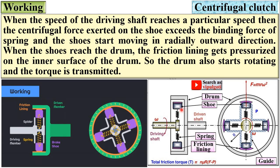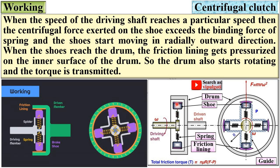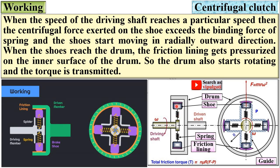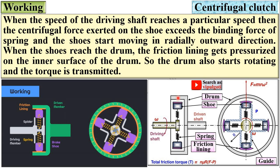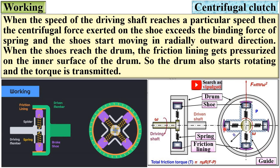When the centrifugal force is greater than the binding spring force, the shoes start moving radially outward. When the shoe reaches the drum, the friction lining gets pressurized on the inner surface of the drum, the drum starts rotating, and torque is transmitted from the driving shaft to the driven shaft.